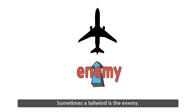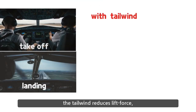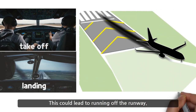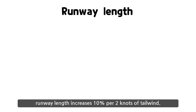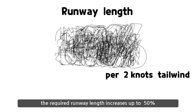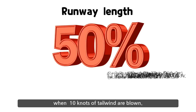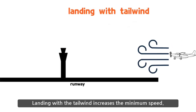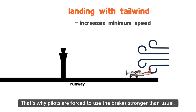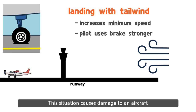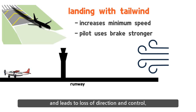Sometimes the tailwind is the enemy. During takeoff and landing, the tailwind reduces lift force, making the takeoff and landing runway distances longer. This could lead to running off the runway. According to statistics, runway length increases 10% per 2 knots of tailwind. With this formula applied, the required runway length increases up to 50% when 10 knots of tailwind are blown. Landing with a tailwind also increases minimum speed, forcing pilots to brake harder than usual, causing damage to the aircraft and loss of direction and control.